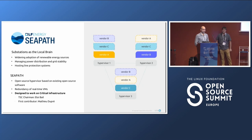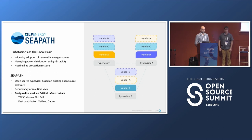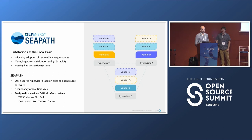Substations are very critical — they manage the grid. If there's an issue, they host protection systems. For instance, imagine a tree falling on a high-voltage line: substations will detect that very quickly — we're talking milliseconds — and will reorganize the grid to keep it working. C-Pass is an open source project that aggregates tons of open source software; we are not reinventing the wheel.